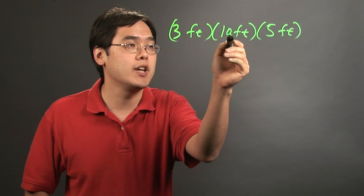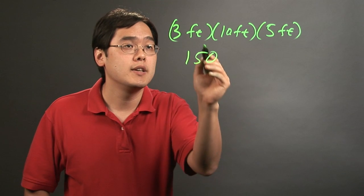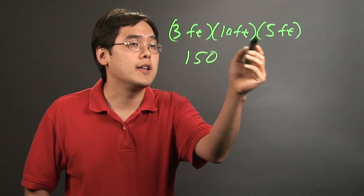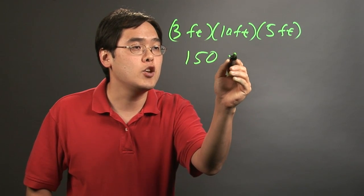For example, 3 times 10 is 30, times 5 is 150. And then to get the cubic feet, foot times foot is square feet, and then square feet times another foot is cubic feet.